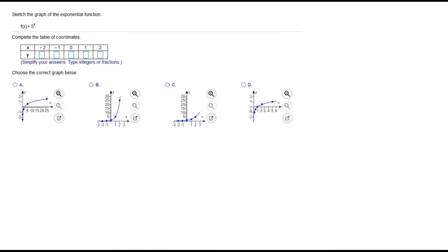We have some choices here for the graph. My function is f of x equals 5 to the x. Going to fill out this table, they give us x values of negative 2, negative 1, 0, 1, and 2. We'll substitute that into the function to get the y values.